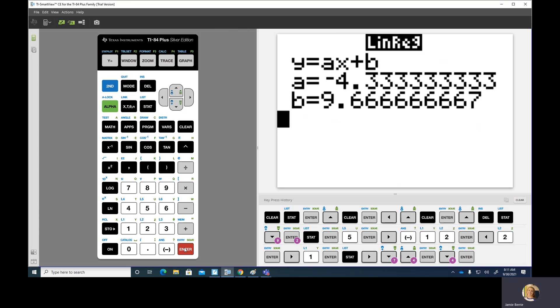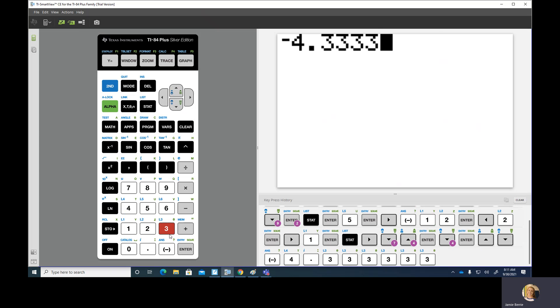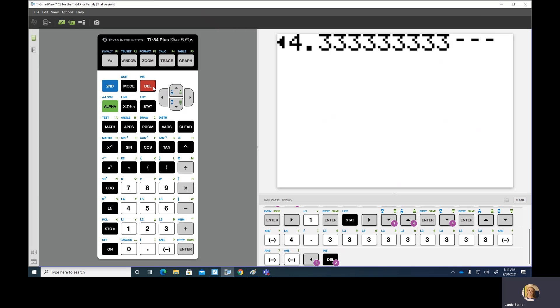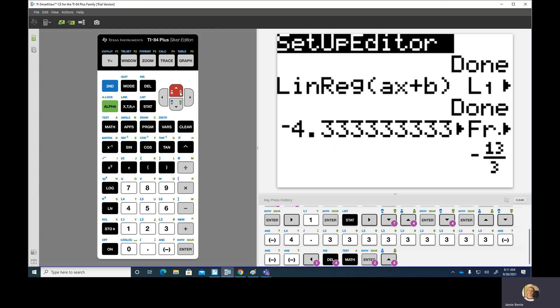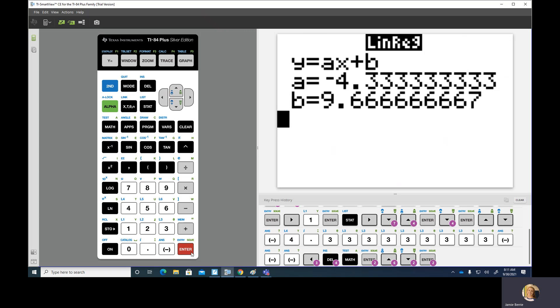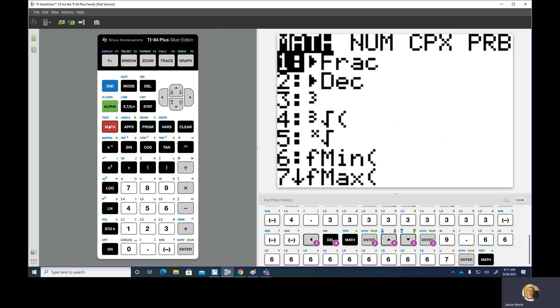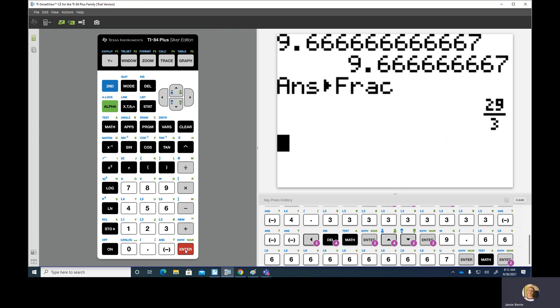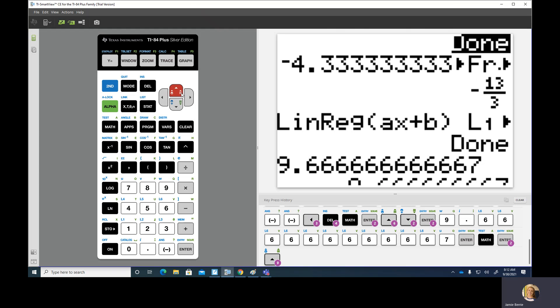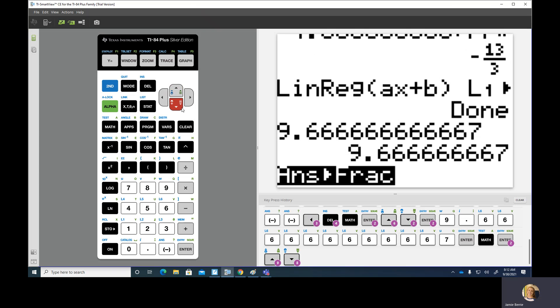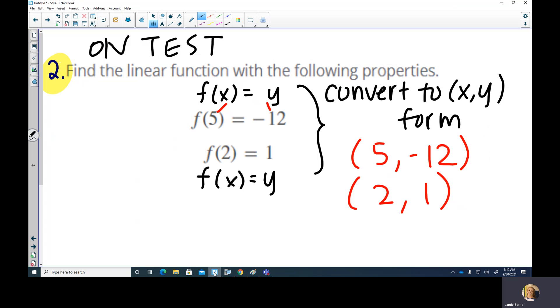If you do, go down here and hit setup editor. Go back to stat, go to setup editor, hit enter twice and it'll fix it. If anything weird happens with your calculator on the day of the test, you can always bring it up here to me and I'll try to fix it. We're going to put in our points. X's go in the L1 column, Y's go in the L2. So that's going to be 5, -12, and 2, 1. So 5 enter, go over here -12, then 2 enter, go over here put in the 1.